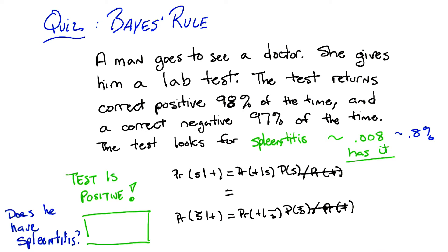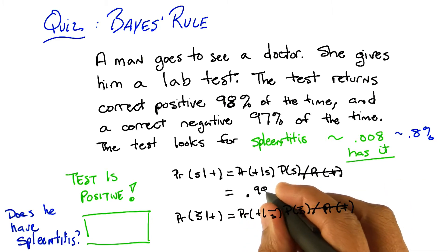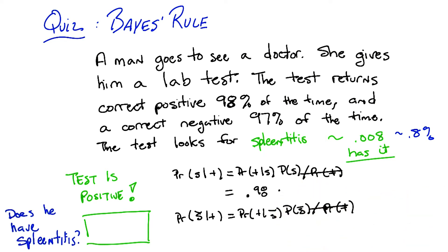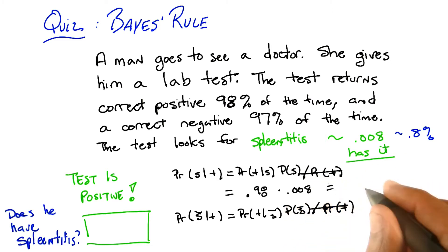Okay. So, let's compute this. So, what is, in fact, the probability of me getting a plus, given that I have splenitis? All right. So it says in the setup, the test results correct positive 98% of the time. So I think that's what it means. I think it means that if you really do have it, it's going to say that you have it with that probability. Okay. So, that's just 0.98. Okay. And that's times the prior probability of having splenitis, which is? 0.008. Right. 0.008. And what's that equal to? It is equal to 0.0078. 0.00784.